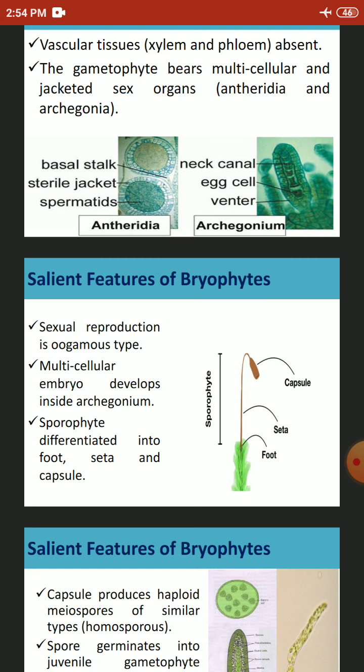The female reproductive organ is the archegonium. The archegonium is a flask-shaped structure consisting of two parts: the basal swollen part called the venter, and a long slender neck. The neck consists of neck canal cells, and the venter has a venter canal cell and an egg. The sex organs in bryophytes are multicellular and jacketed, whereas the sex organs of lower plants lack a sterile jacket layer. The sexual reproduction is oogamous type.